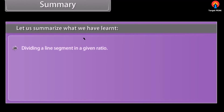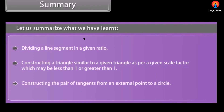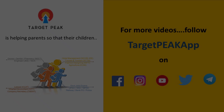Let us summarize what we have learned: dividing a line segment in a given ratio; constructing a triangle similar to a given triangle as per a given scale factor, which may be less than 1 or greater than 1; and constructing the pair of tangents from an external point to a circle.